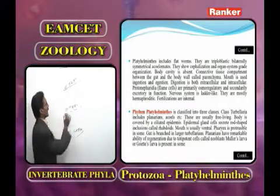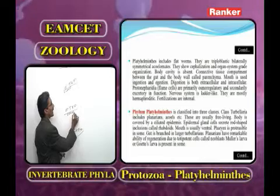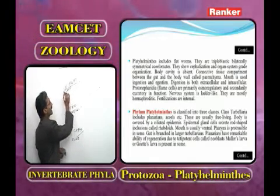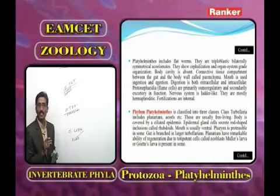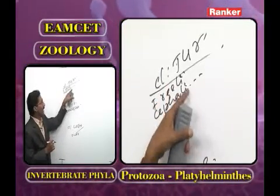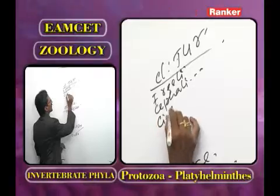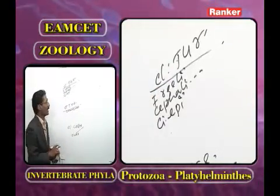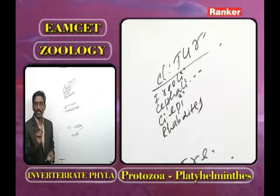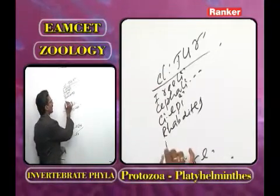In class Turbellaria, all are free-living, no parasites. Moderate cephalization is present — a distinct head with sense organs is at the anterior end. The body is covered by ciliated epidermis containing rod-like rhabdites, which secrete mucus to help in attachment during locomotion. Regeneration, brought by neoblast cells, is observed only in Turbellaria.